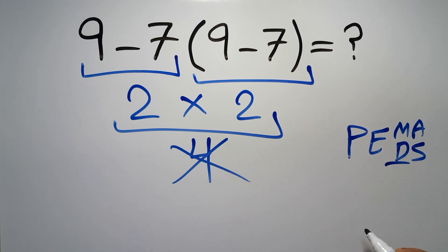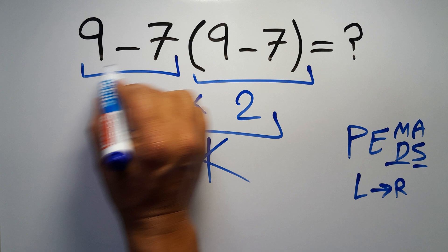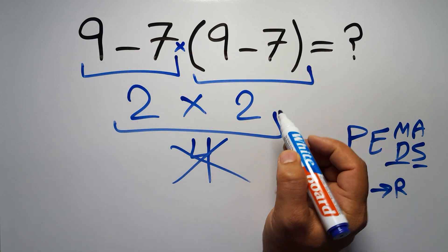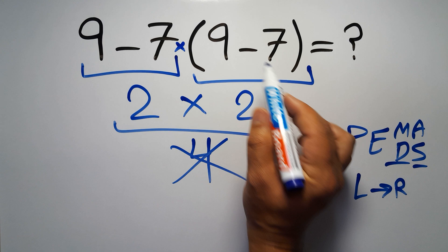Remember that multiplication and division have equal priority, and we have to work from left to right, and the same applies to addition and subtraction. In this expression we have one subtraction, one multiplication, and one parentheses. Inside this parentheses we have one subtraction.